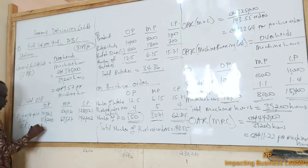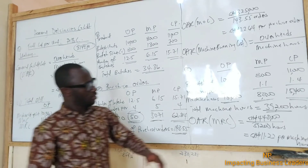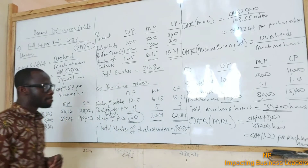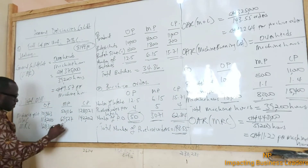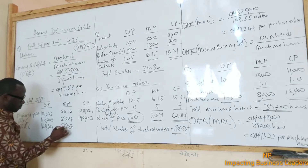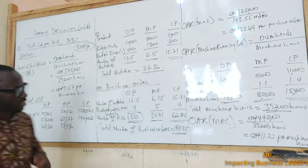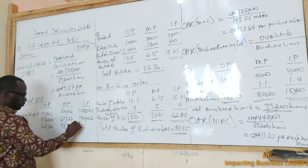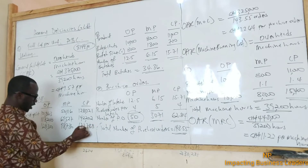Then for MP: 2264 times 30.71 gives us approximately 69,526. Then for CP: 2264 times 62.81 — that's the machine ordering cost result for CP, giving approximately 142,242.